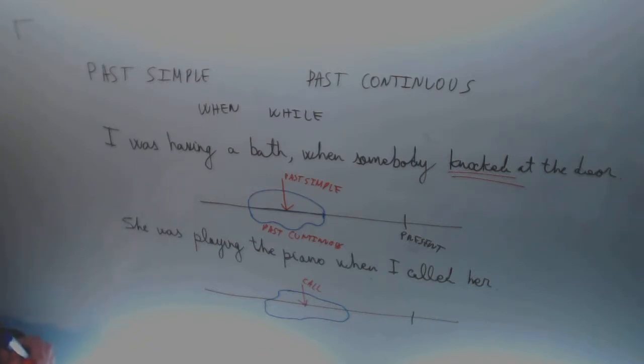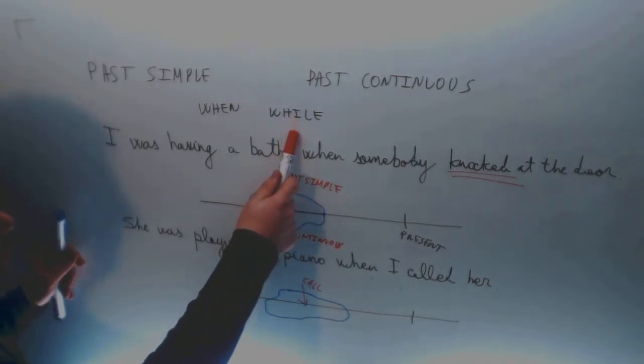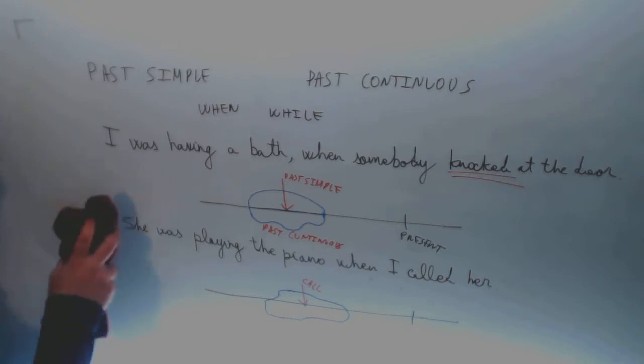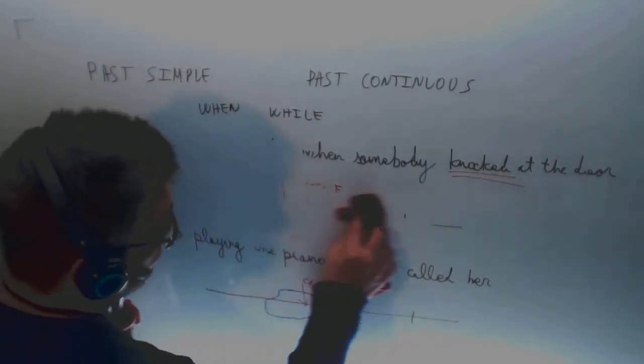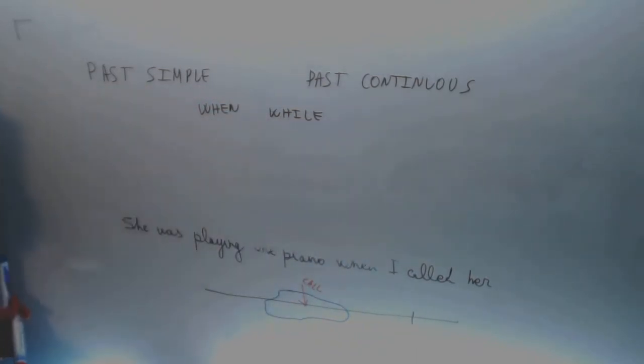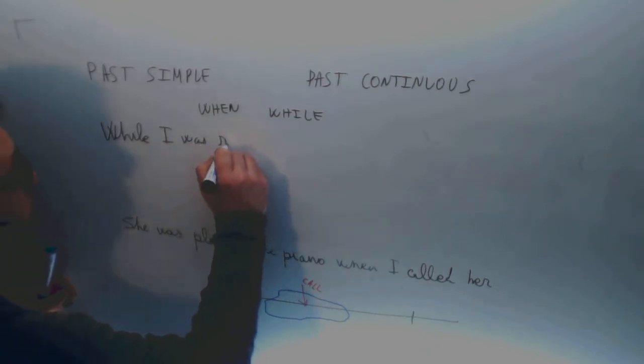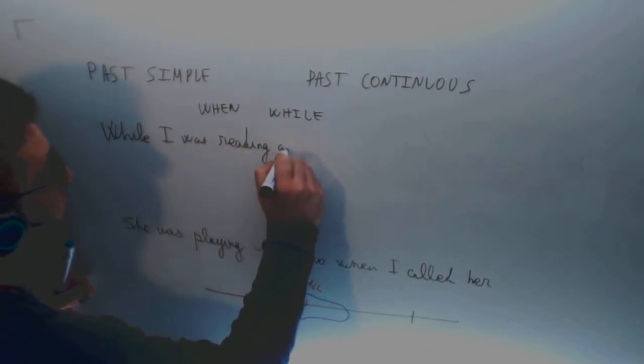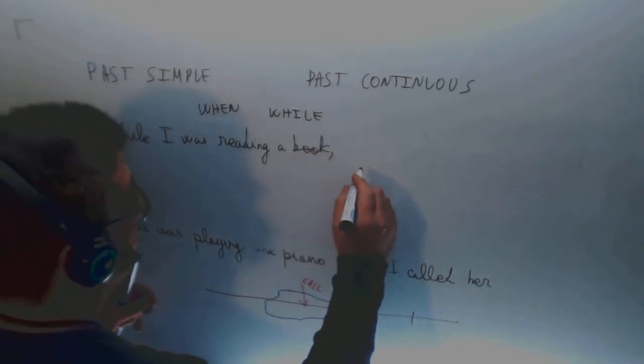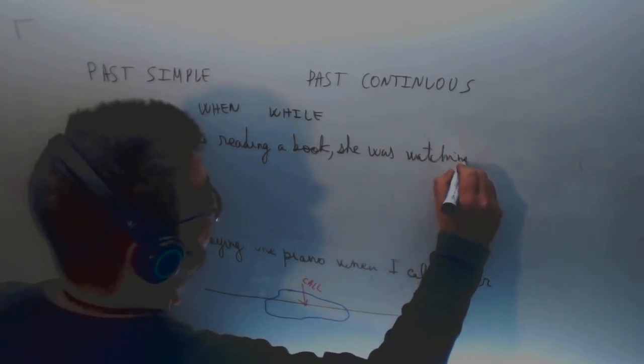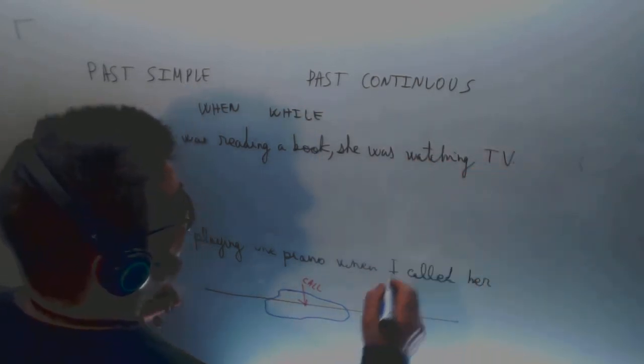It's easy. You can also use while. When you use while, you use the two verbs in past continuous. I was reading a book while she was watching TV. Mientras yo estaba leyendo un libro ella estaba viendo la tele.